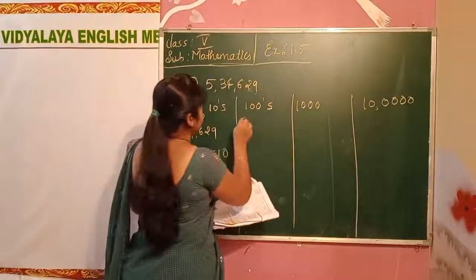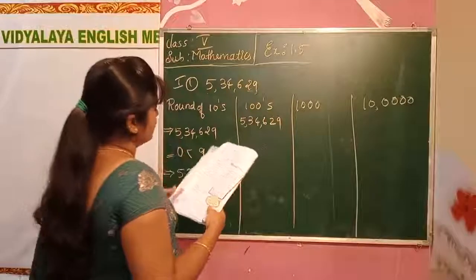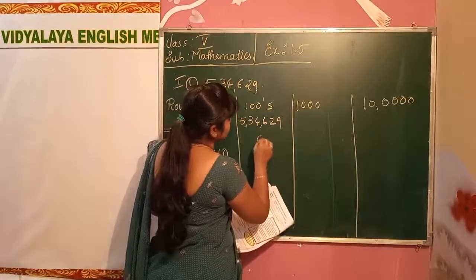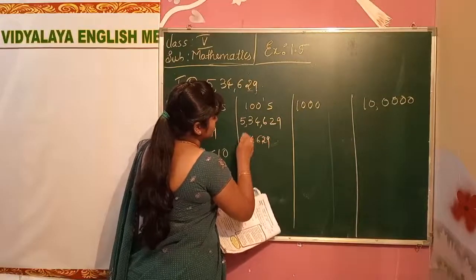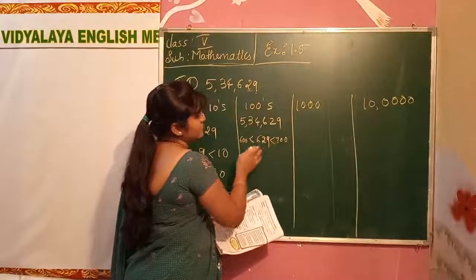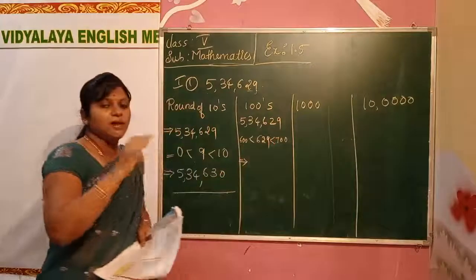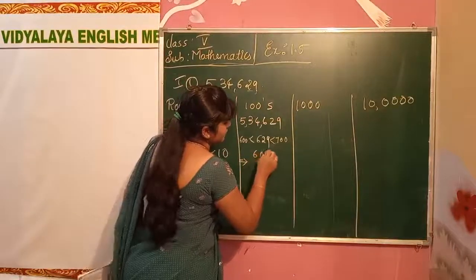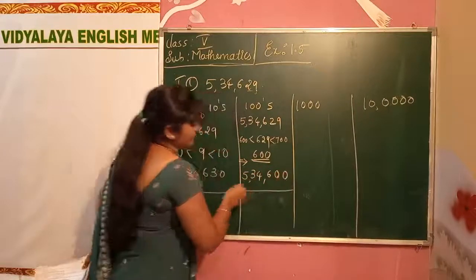Next, hundreds place for 5,34,629. We have to see the hundreds place. Six twenty-nine — six hundred comes under six hundred and seven hundred. Twenty-nine is less than fifty, so we have to write six hundred. We round it off to six hundred. So the answer is five lakh thirty-four thousand six hundred.